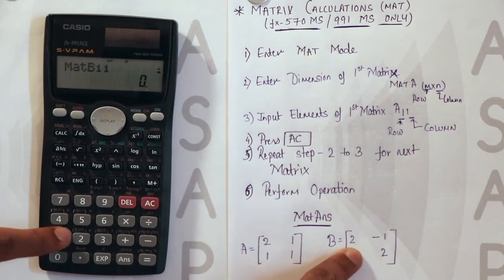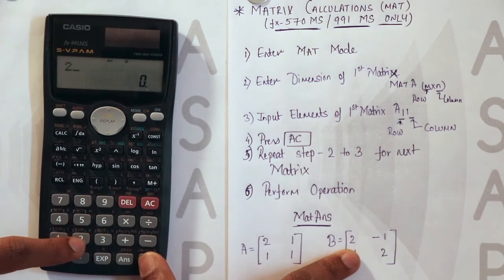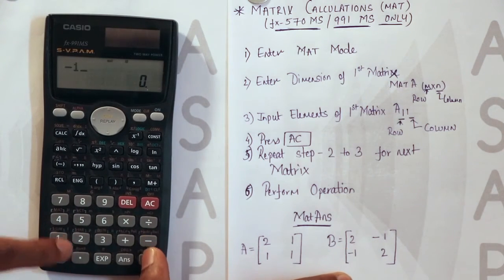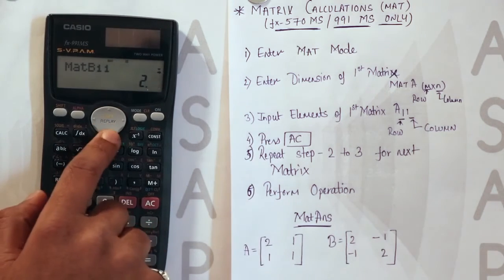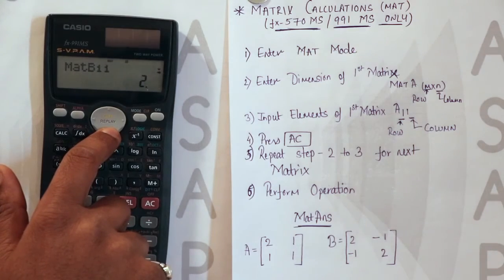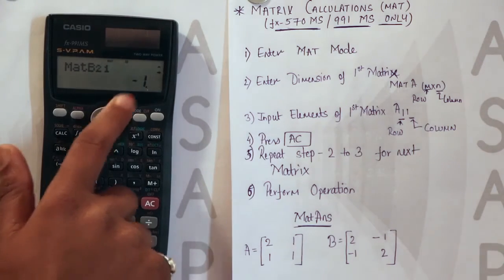Now matrix B. 2. The first element. Then minus 1. Then again minus 1. And 2. Here you can cross check the elements. That is 2, minus 1, minus 1 and 2.